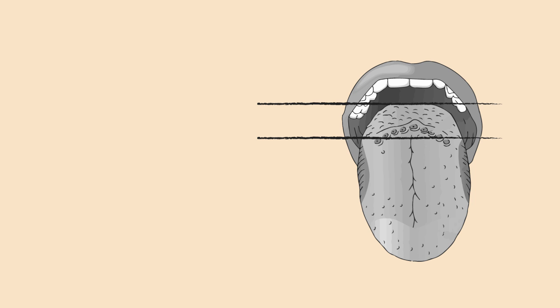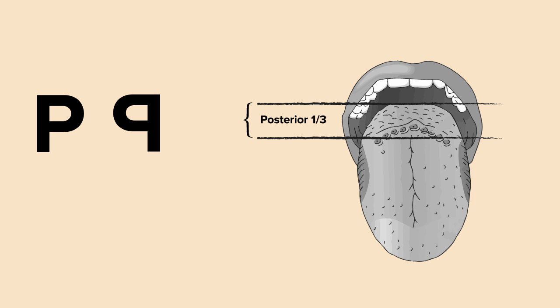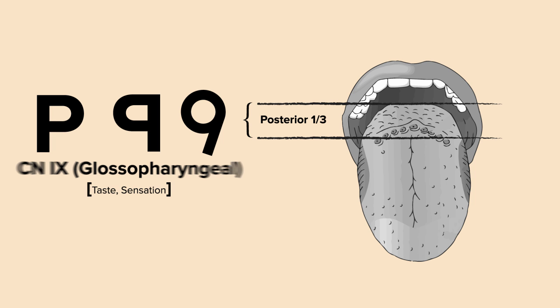Moving towards the bulk of the tongue, let's talk about taste and sensation first. Moving toward the posterior one-third of the tongue, think P for posterior. Now if you flip the letter P around, it looks like the number 9. So this portion of the tongue is innervated by cranial nerve 9, the glossopharyngeal nerve, which is responsible for both general sensation and taste in this area.